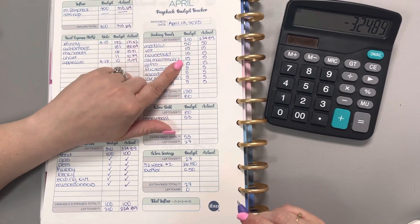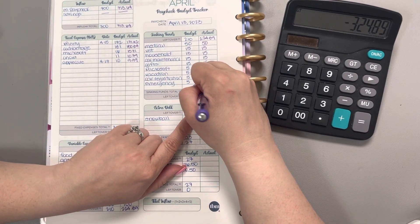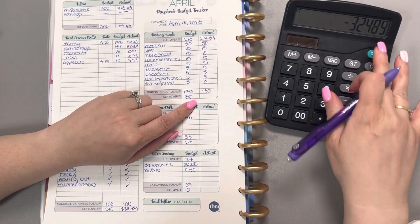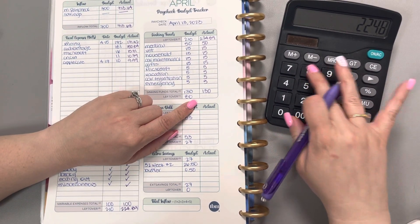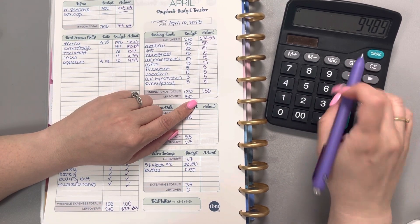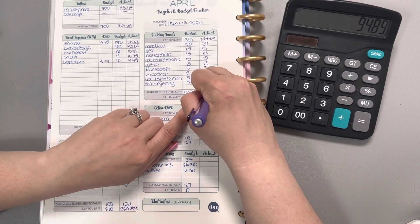When we add those together, it gives us a total of $130. When we take $130 away from our leftover, that gives us $94.89.